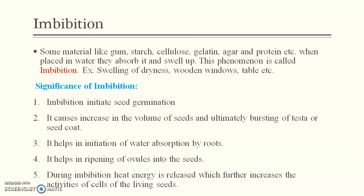Next topic is Imbibition. The most main and evident result of imbibition is germination of seeds. When you grow vegetables in a kitchen garden — like ghia, turai — if you soak the seeds in water before planting, they germinate faster. This is due to the process of imbibition, because soaking causes rapid imbibition of water.